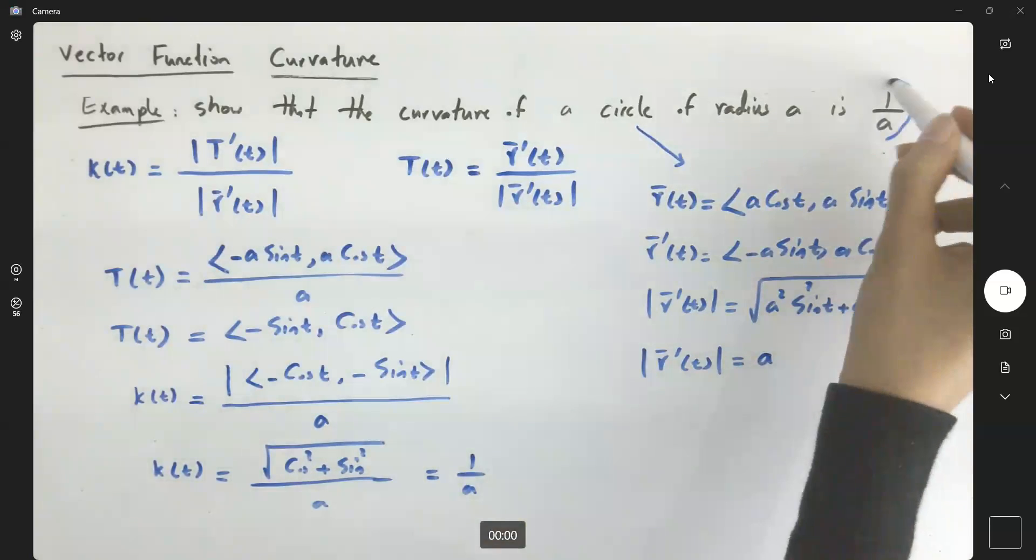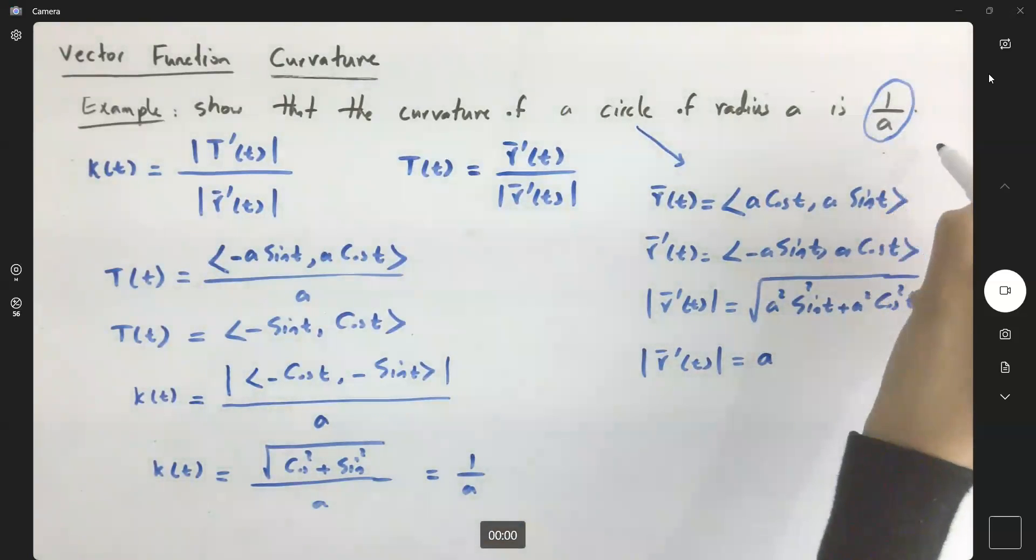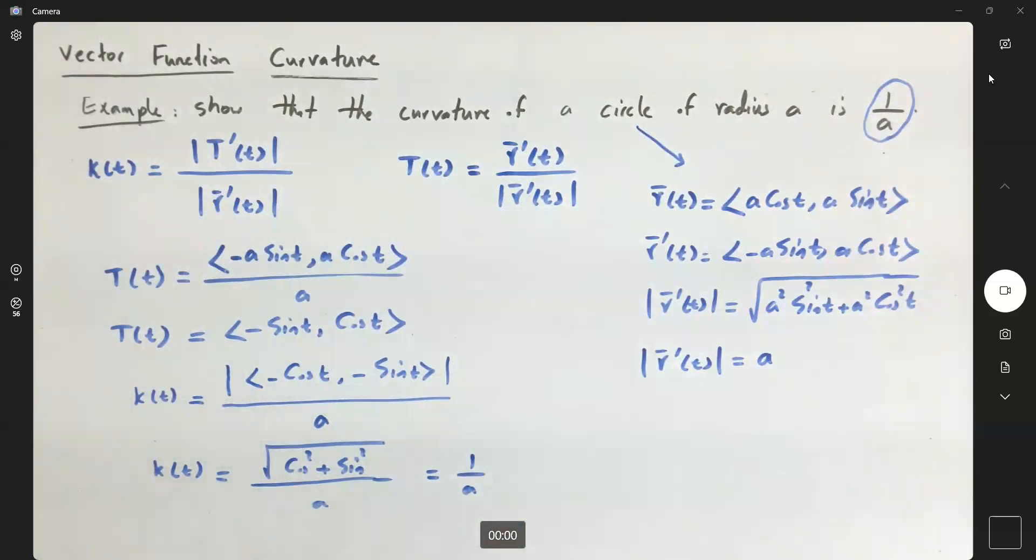It just showed that the curvature depends on 1 over the radius of the circle. So, this is our conclusion.